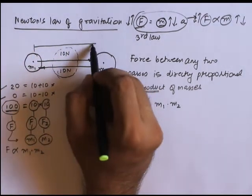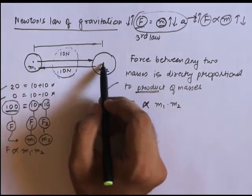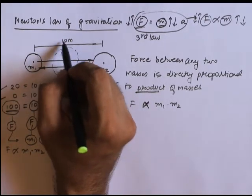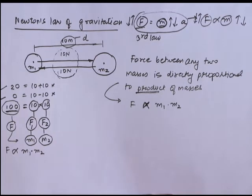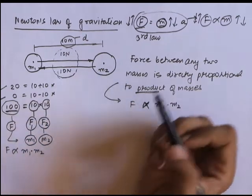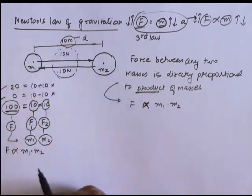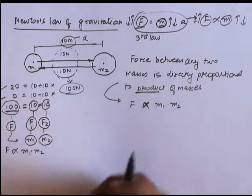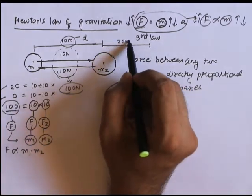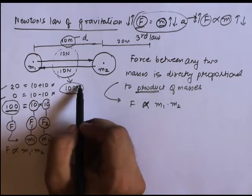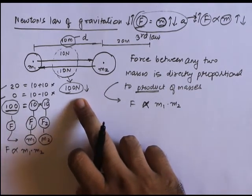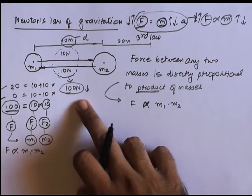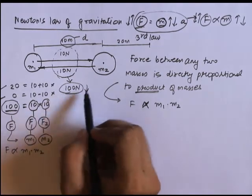Now, between these two masses, this is the center of m1 and this is the center of m2. Let's say the distance between them is 10 meters — you can denote it by the letter d. Now if I increase this distance to 20 meters, we observe that the force between the two masses decreases. When the distance was 10 meters the total force was 100 Newton; let's see how it changes when I increase the distance.